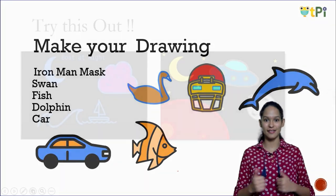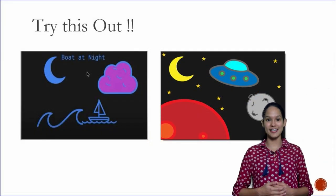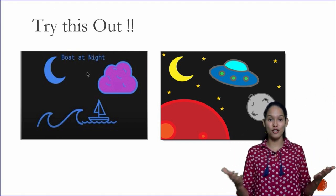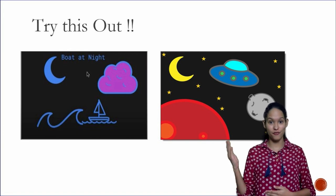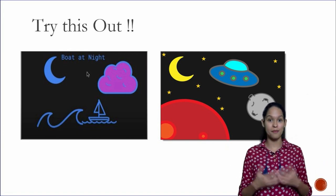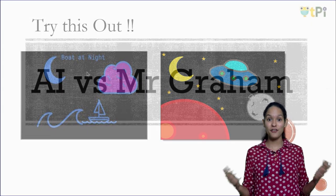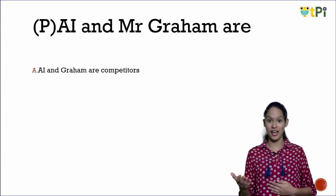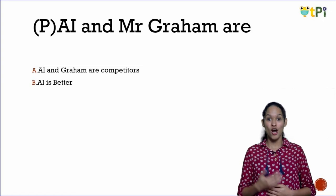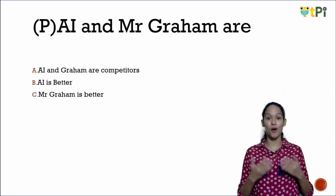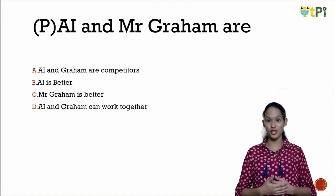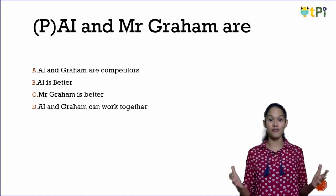Here's an assignment — these are drawings done by many of your friends from different schools. You can do something similar or come up with something unique. Now, what do you think: are AI and Mr. Graham competitors? Option A: they compete; Option B: AI is better; Option C: Mr. Graham is better; or Option D: AI and Mr. Graham can work together. I think it's Option D — they can definitely work together, because when we co-create something, we achieve our full potential.